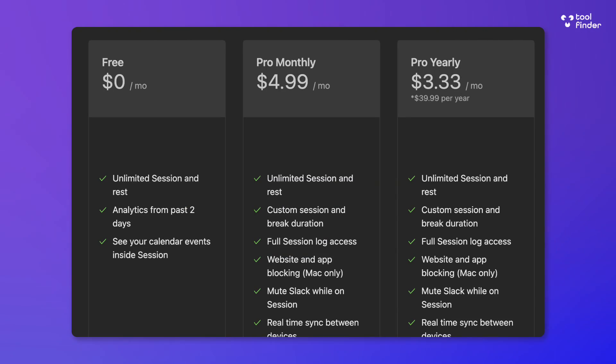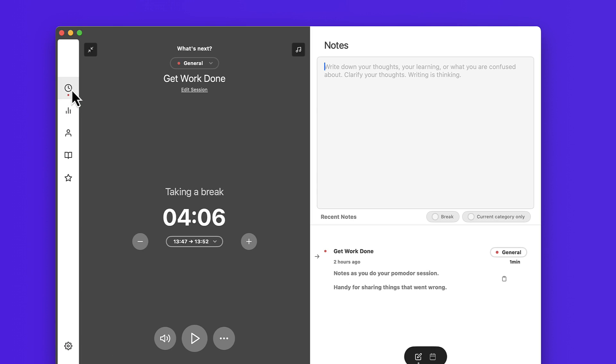You can get Session through Setapp, which is a $9.99 subscription that bundles many apps including Session, unlocking everything. Otherwise, the free plan offers unlimited sessions and rests but limits statistics to the past two days. You can see your events in session, but website blocking is Mac only and part of premium, along with features like Apple Calendar integration and real-time sync between devices.